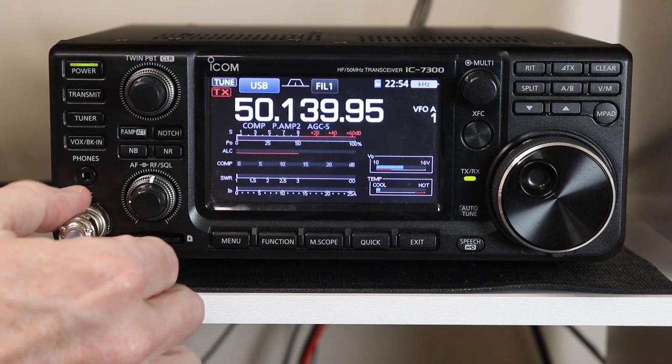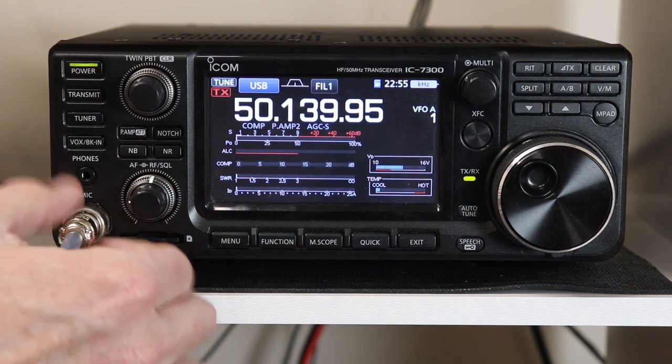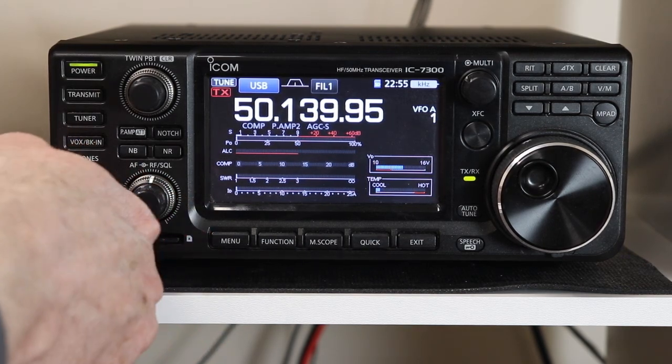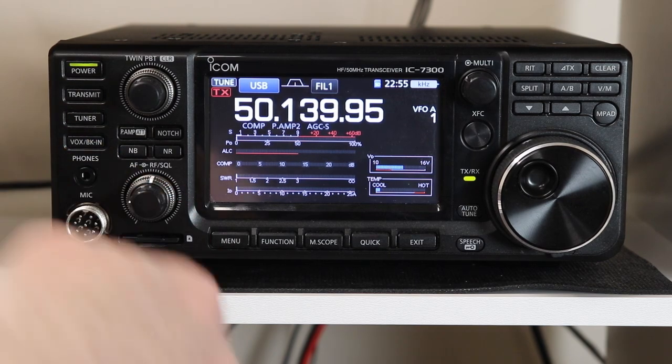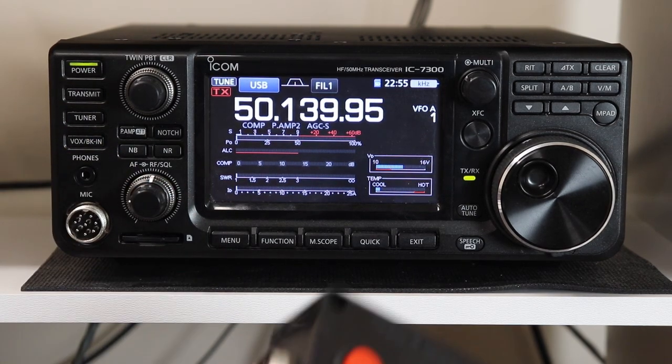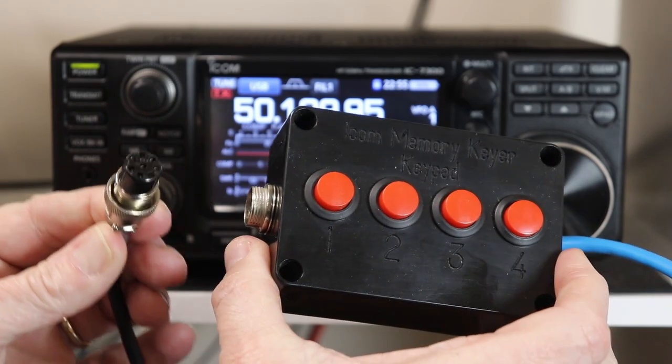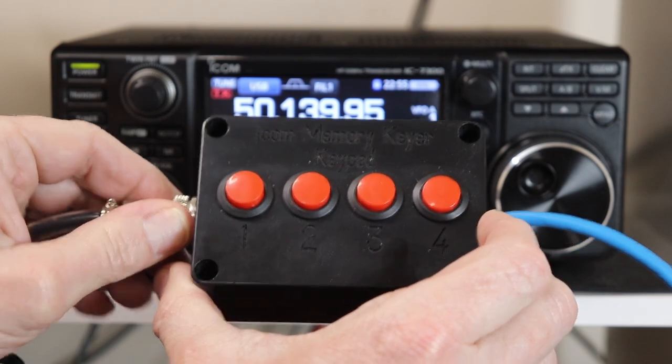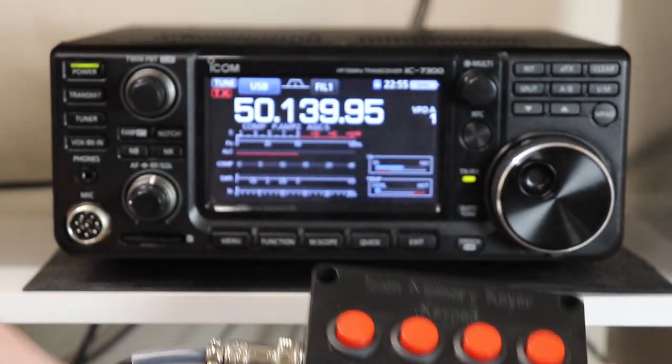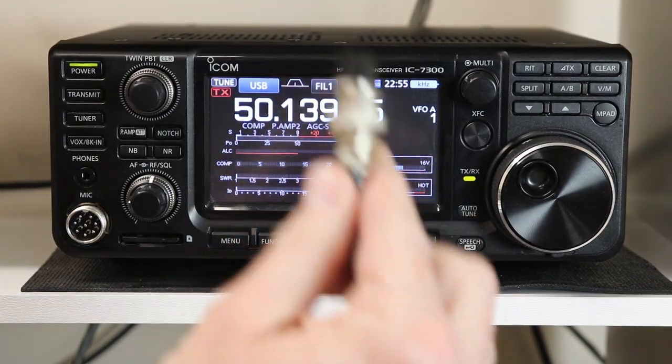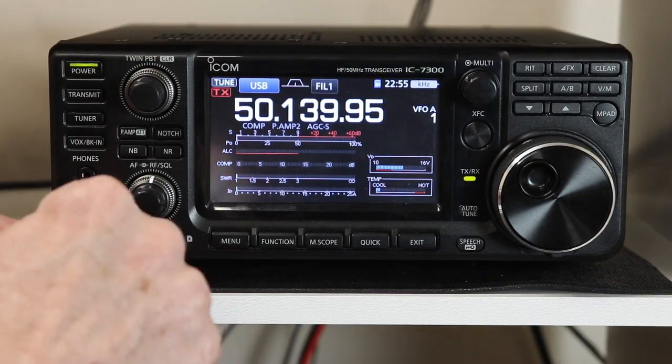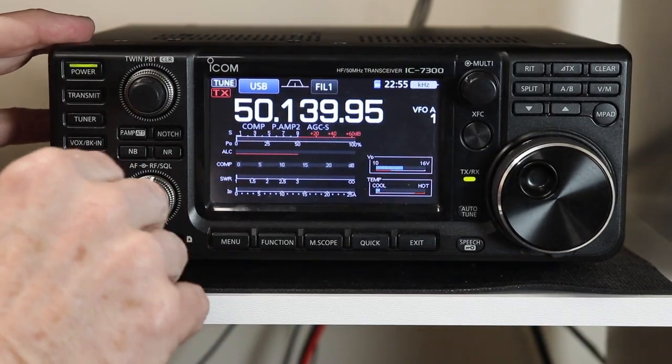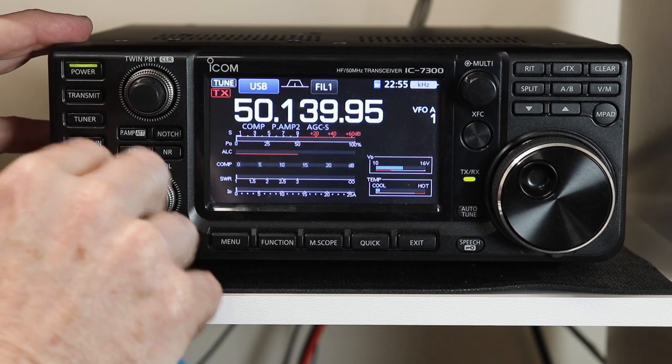So first we'll need to connect it up. We're going to disconnect the existing hand mic and then we're just going to simply take the hand mic and plug it into the jack on our keypad box and screw that in. Then we're just going to take the plug that we put on the keypad box and connect that connector back into the microphone jack on the rig. Now we just have one more step.